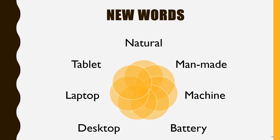Next word is Machine. Machine spelling: M-A-C-H-I-N-E, Machine. Next word is Battery. Battery means cell. Spelling: B-A-T-T-E-R-Y, Battery. Next is Desktop. Desktop means a computer kept at one place.